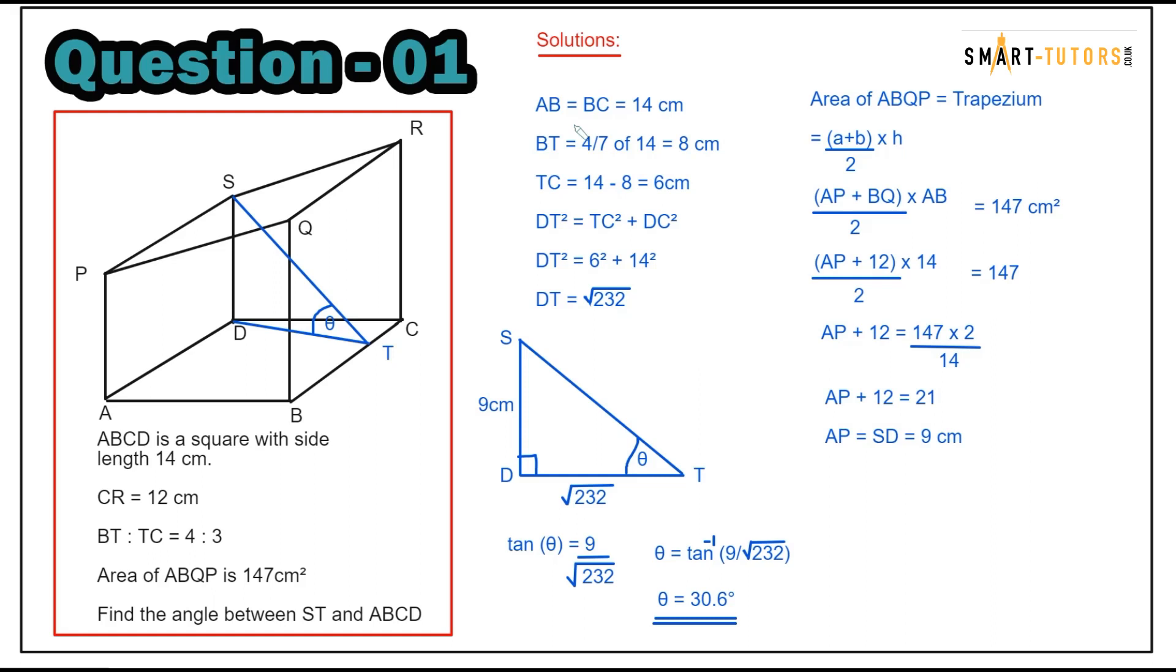AB equals BC which is 14 centimeters. BT ratio 4 to 7, so 4 over 7 of 14 centimeters is 8 centimeters. TC, the remaining, is 14 minus 8 which is 6 centimeters. You can see a right angle triangle there. DT squared equals TC squared plus DC squared, so using Pythagoras theorem, DT equals square root of 232.